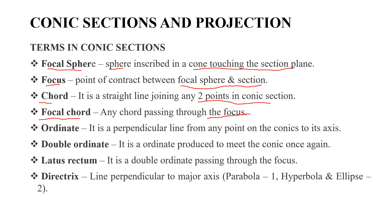The ordinate is a perpendicular line from any point on the conic to its axis. When the ordinate is produced to meet the conic once again, it is called a double ordinate. A double ordinate passing through the focus is called the latus rectum.